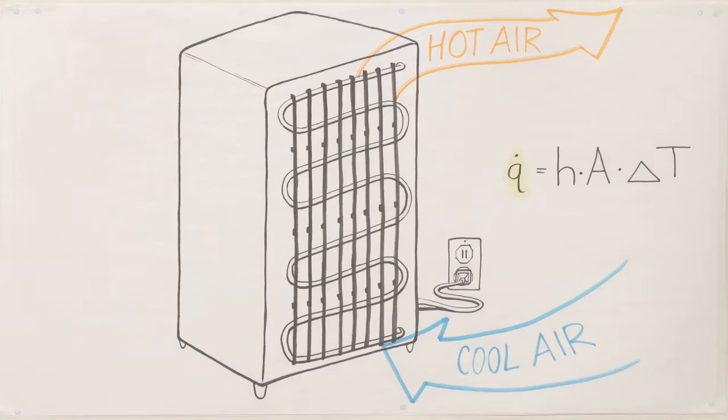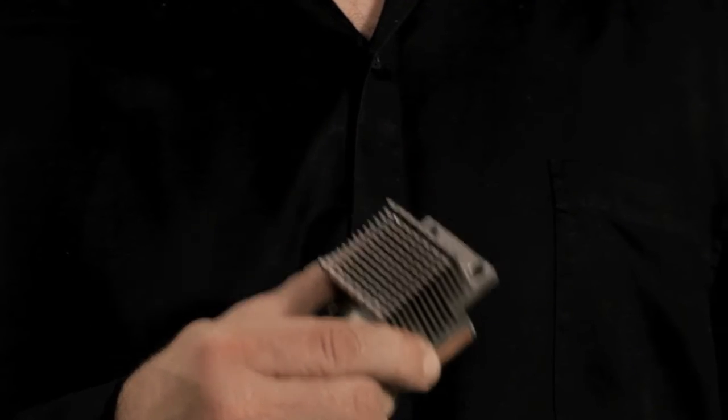Similar to conduction, the rate at which heat is lost is equal to a heat transfer coefficient times the area of the surface exposed to the fluid times the temperature difference between the surface and the fluid. Heat sinks have fins to maximize that surface area.